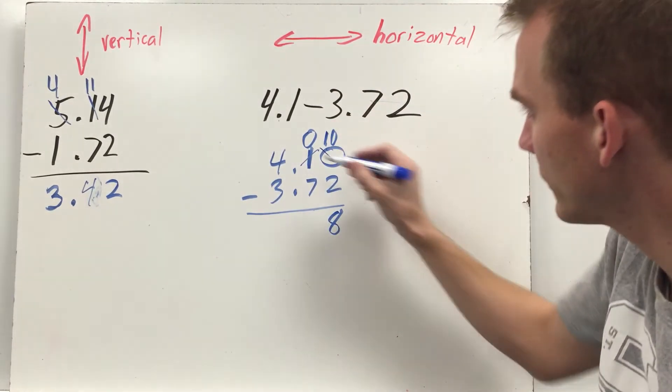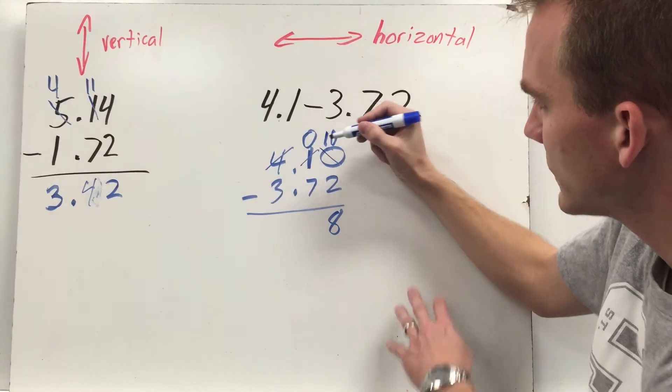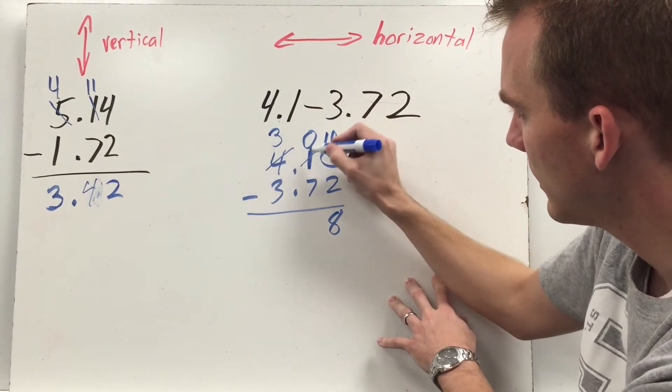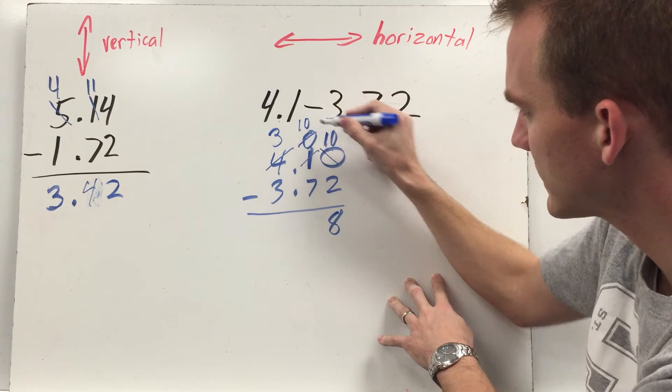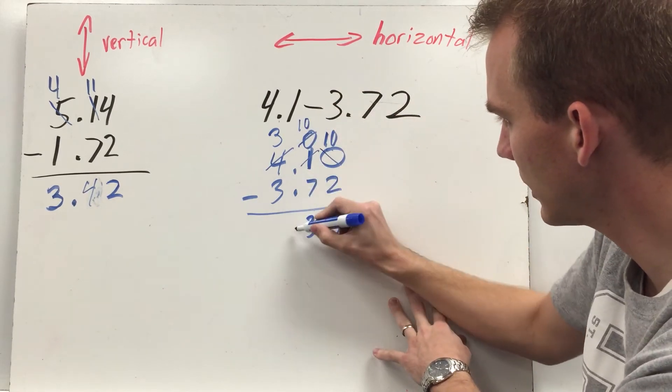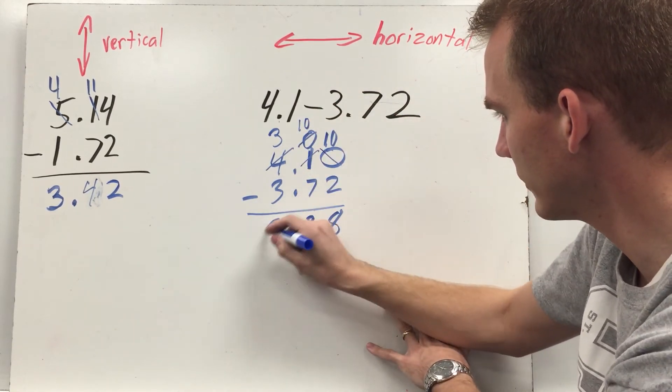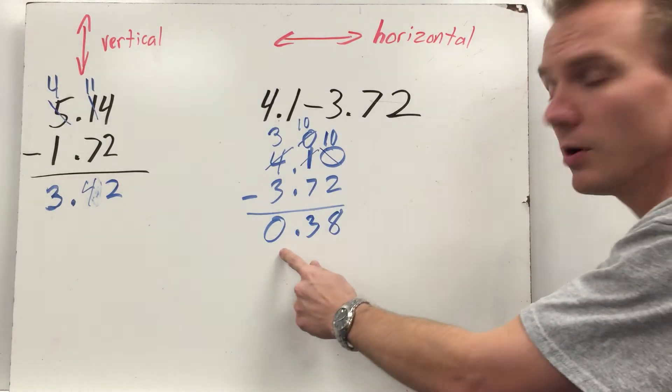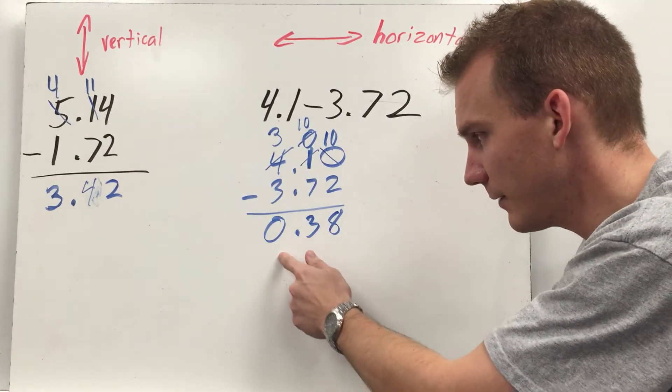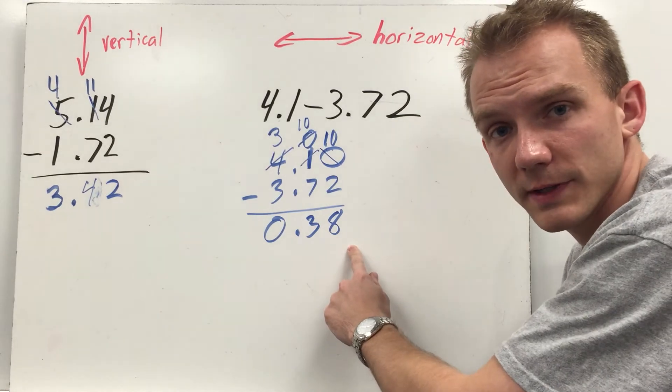Zero minus seven, I have to regroup again, so my four ones are going to become three ones. My one-tenth is going to become ten-tenths. Ten minus seven is three. Bring down my decimal point. Three minus three is zero. Generally, you don't have to have a zero there. I prefer to have it to indicate zero ones and thirty-eight-hundredths.